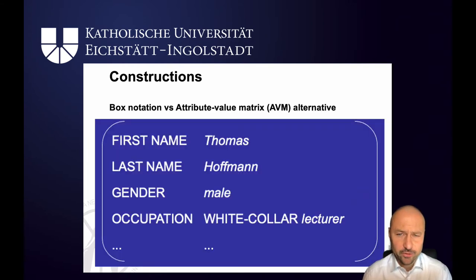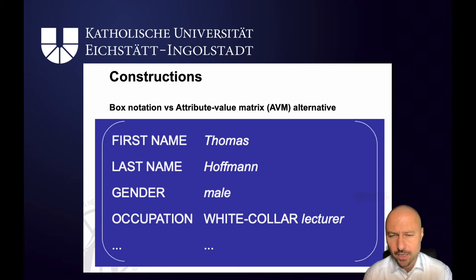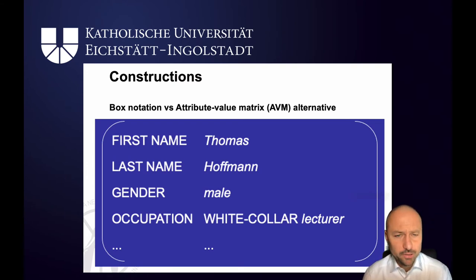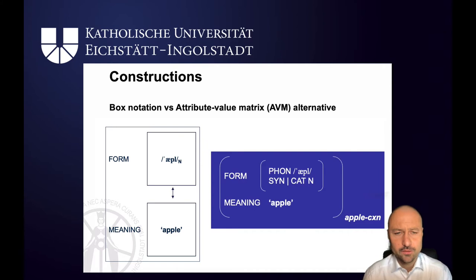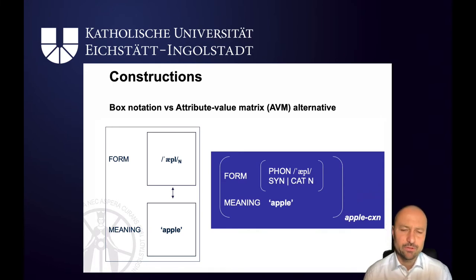This is the so-called attribute value matrix alternative, which you're also going to come across in several constructionist publications. The idea is that you've got an attribute like first name, last name, gender and occupation, and for each specific instance you would fill it in. For me, the value of the attribute first name is Thomas, the value of last name is Hoffman, the value of gender is male, and so on. In this sense you can also treat constructions as attribute value matrices. So form is like first name, meaning is like last name, and the instantiation is apple — the property of being an apple.